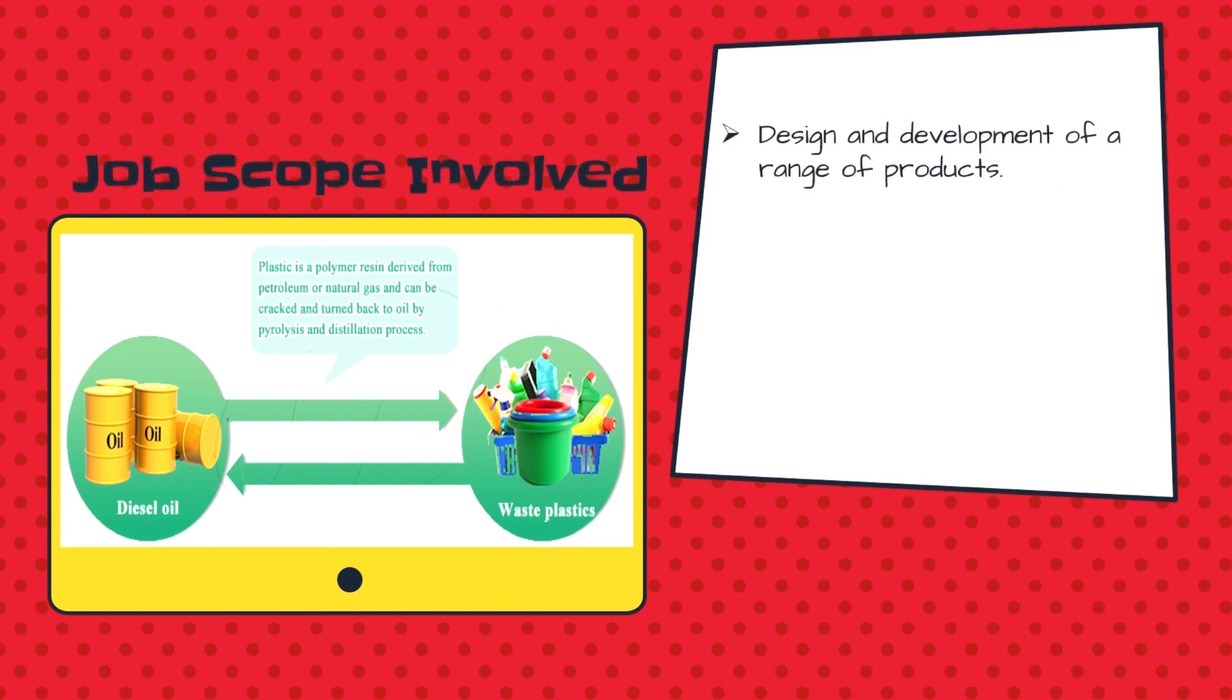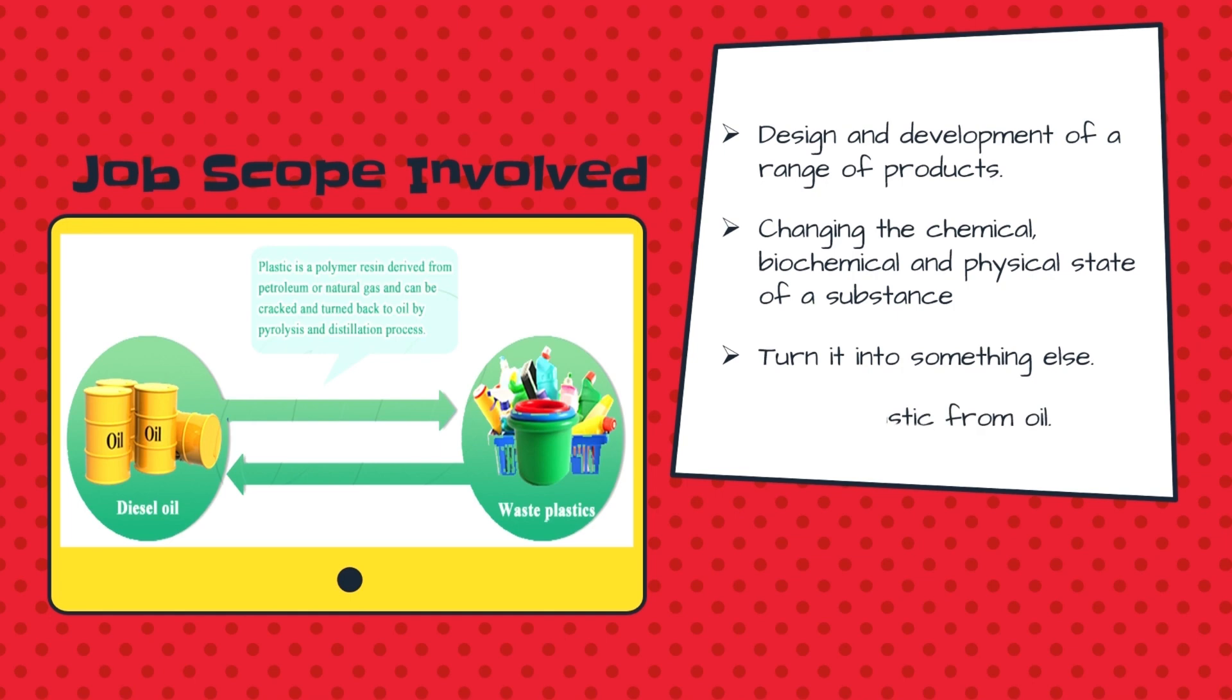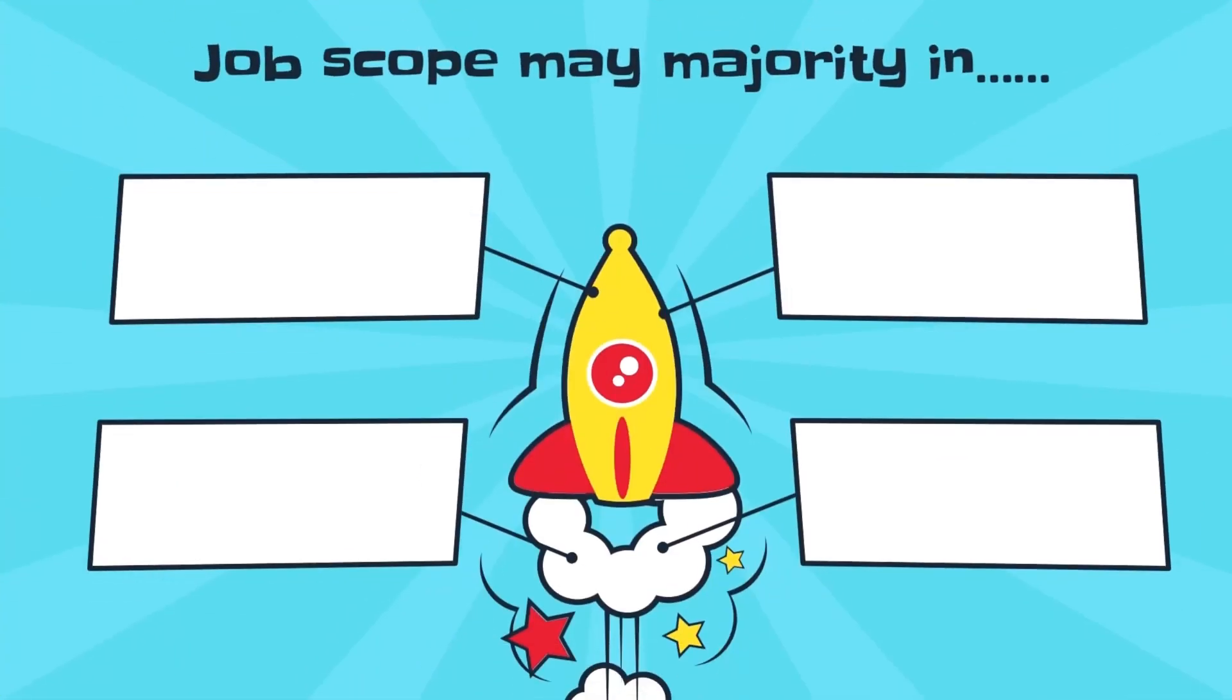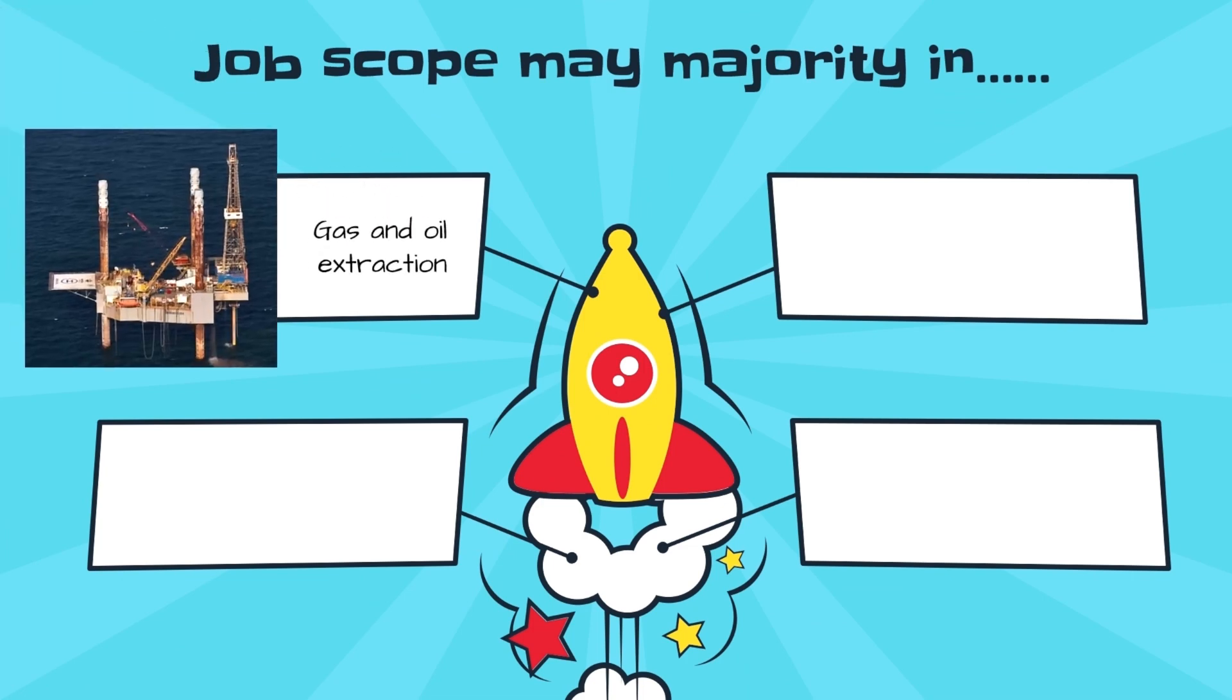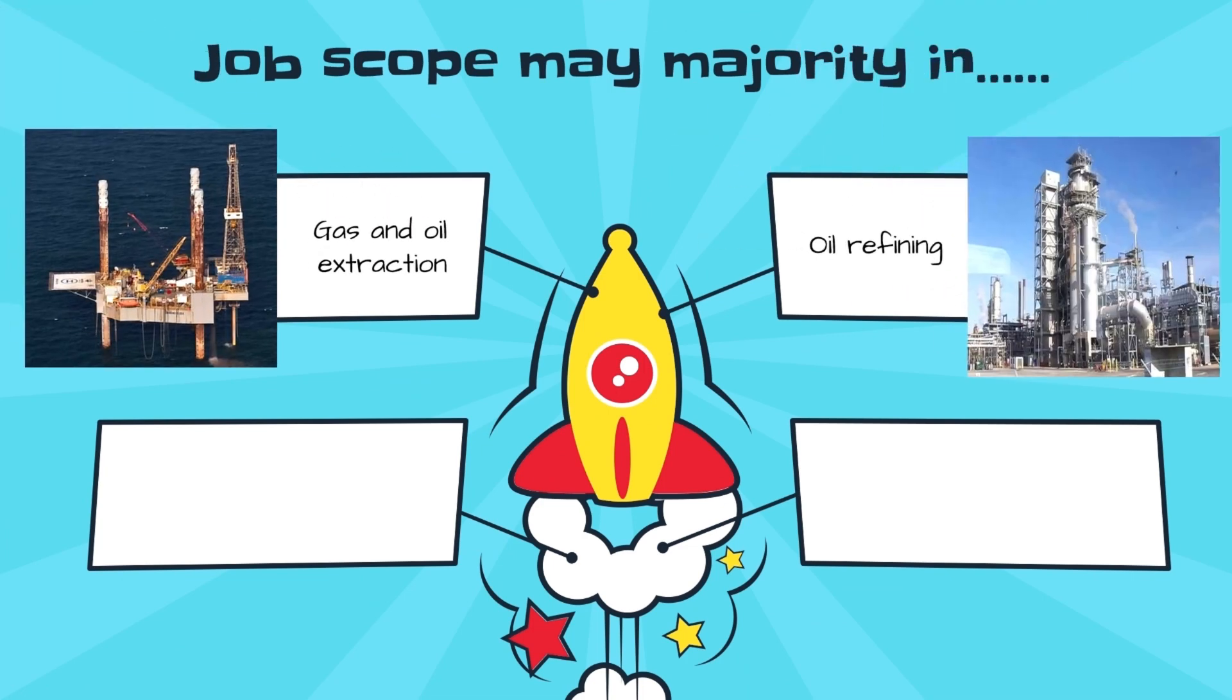As a chemical engineer, you will be involved in the design and development of a range of products. Your work will focus on changing the chemical, biochemical, and physical state of a substance to turn it into something else, such as making plastic from oil. Therefore, your job scope may be majorly in gas and oil extraction, oil refining.